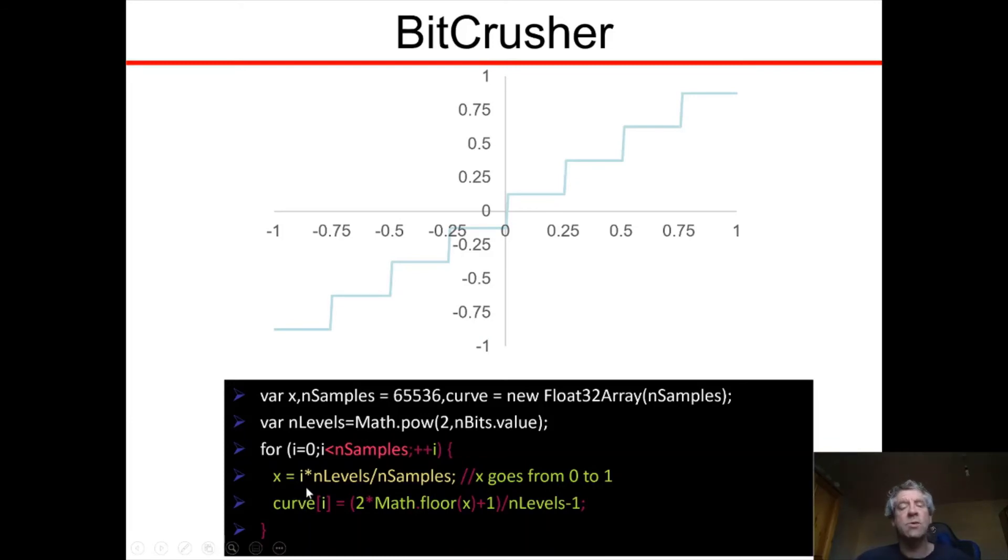Now we need to take those values 0 to 1 and produce our curve, have those 8 flat regions here, the 8 quantization levels there. And we do that by 2 times math.floor of x. Floor gives the largest integer value less than or equal to x plus 1 divided by the number of levels minus 1.